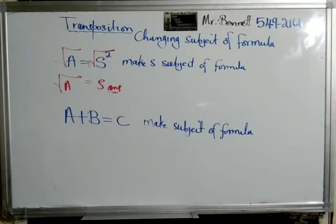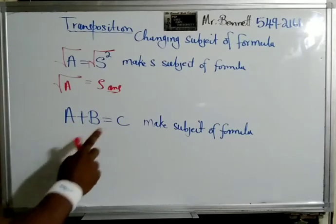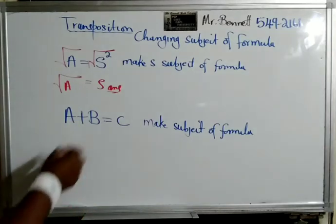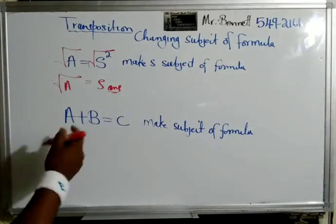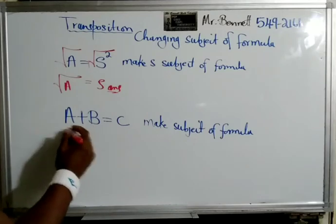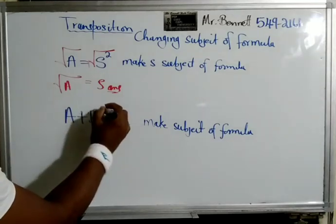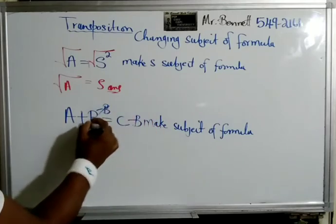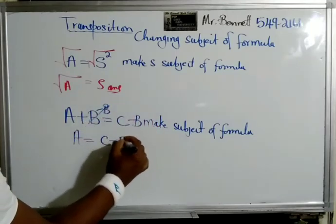What it means is we're going to get rid of b from this side so a stands alone — that's what it really means. The opposite of plus b is minus, so we simply subtract b from both sides. Therefore a is equal to c minus b.